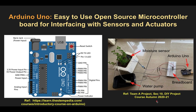Let's start with an application. If you look to your right, this is a project implemented by one of the teams in section 10 in the last semester in this DIY project course. The project was to use a moisture sensor embedded into the soil in the pot, and the objective was to use the reading of the moisture sensor to decide when to switch on the water pump.